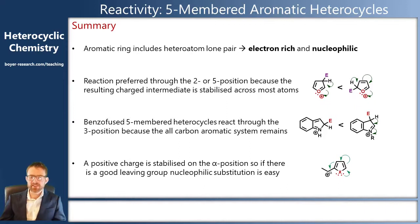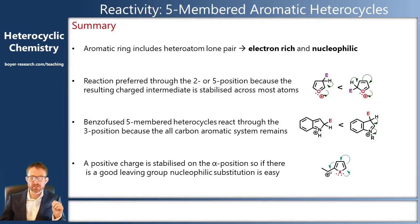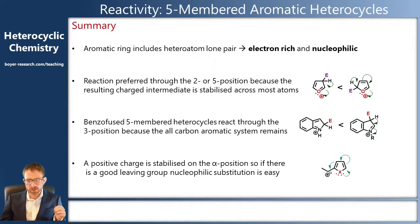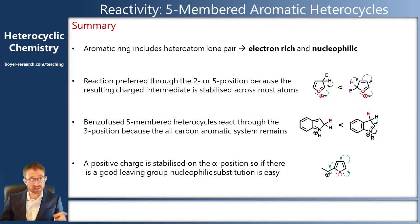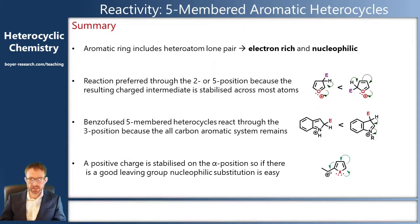To summarize: five-membered heterocycles are electron-rich, and their aromatic system is built out of a high-energy lone pair. Nucleophilic attack of five-membered heterocycles proceeds preferentially through the 2-position because we end up with an intermediate where the positive charge is better stabilized over four atoms. However, this is reversed in the case of fused five-membered heterocycles, because reaction through the 2-position breaks the whole aromaticity, whereas reaction through the 3-position only breaks one ring. Finally, if there's a good leaving group next to our electron-rich heterocycle, we can draw the electrons funneling out to stabilize a positive charge at that position. Thanks for watching, see you next time.